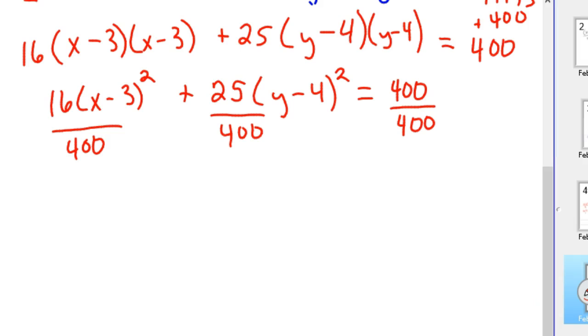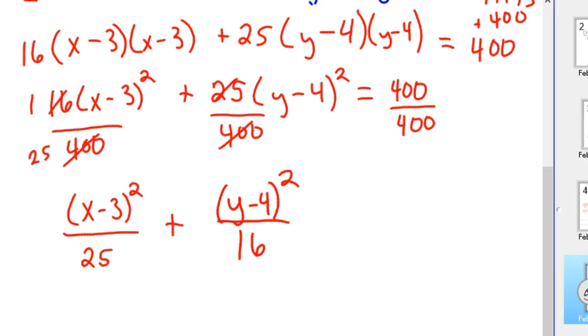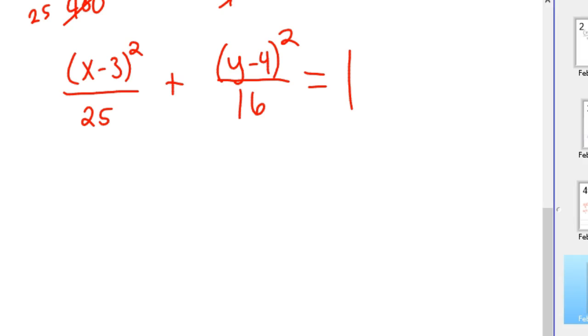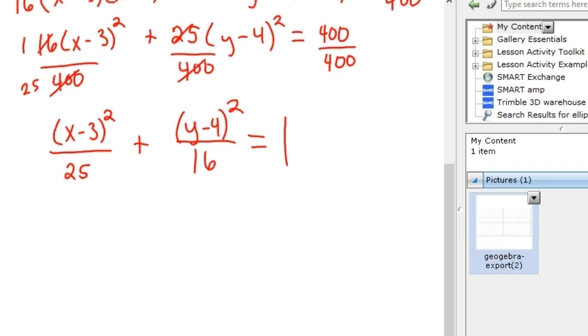And you'd have (x-3)²/25. If you reduce the 400 and the 16, that's 1 and 25. Plus, and you do the same here, 425 would leave you 16 on the bottom. And (y-4)²/16 on the top equals 1. So now this thing's in standard form, and we can go ahead and graph it quickly.